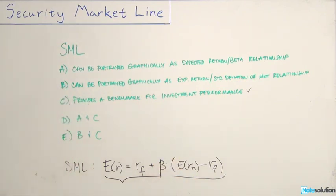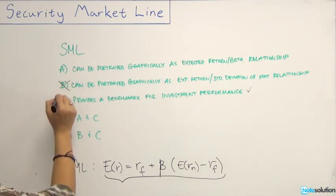So there is a relationship to the market because the market relationship will be defined for beta. However, it's not really the standard deviation of the market return that's used in our equation. We also know that the expected return standard deviation of market relationship is actually defined by the capital market line. So we know that B is incorrect and E is incorrect.